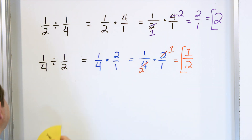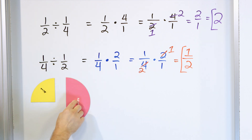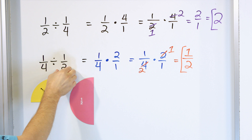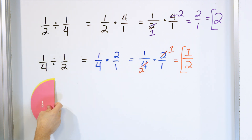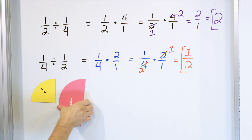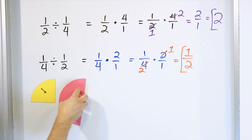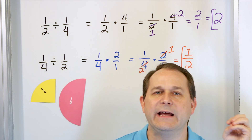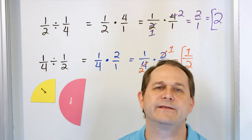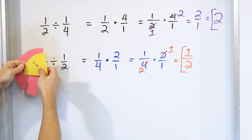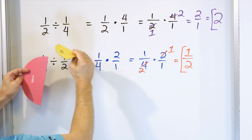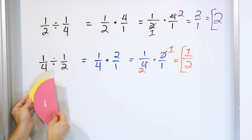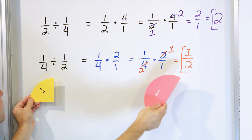What does this mean? I start with one-fourth and divide it by one-half. You're really asking: how many times does one-half fit into one-fourth? Well, one-half is so big it doesn't fit even one whole time. Notice that exactly half of one-half fits into one-fourth, because it's too big — only half of it fits, so the answer is one-half. When we had one-half divided by one-fourth, the answer was two. When we flip the order, the answer is one-half. It doesn't even go once — only a half of it fits.